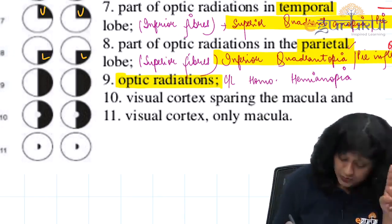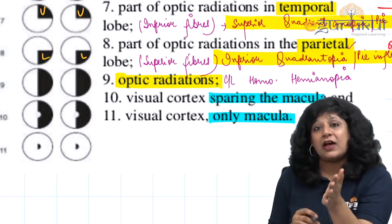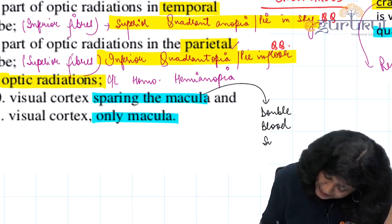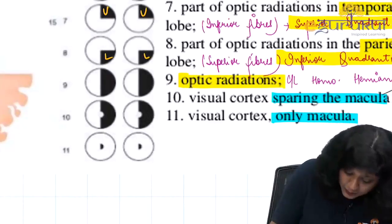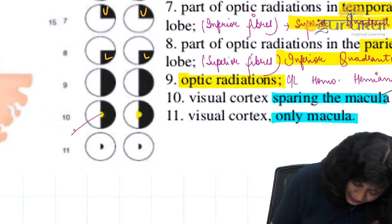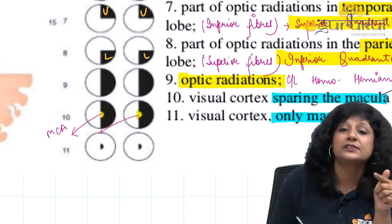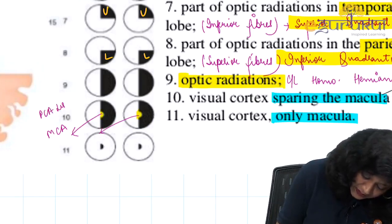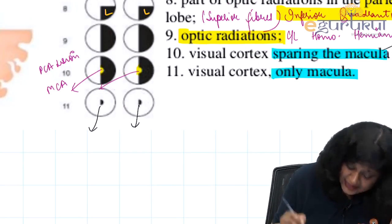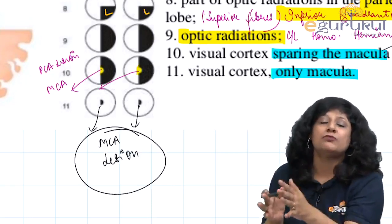At the visual cortex, there are two conditions: macula sparing and macula involvement. Macula sparing occurs because the macula has a double blood supply. If only the posterior cerebral artery is affected, the central area is spared because it is supplied by the middle cerebral artery — this is PCA lesion with MCA sparing. If the middle cerebral artery area is affected, we get involvement only of the macula.